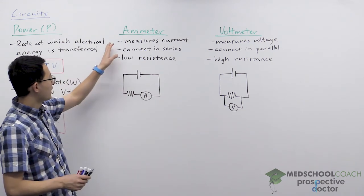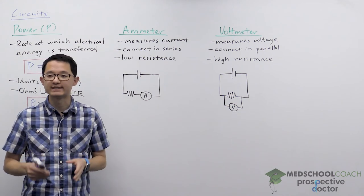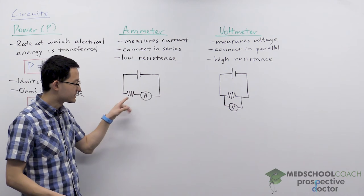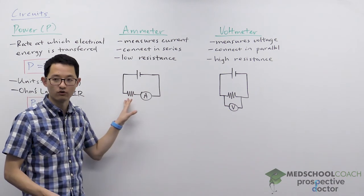First of all, in order to measure current, we know that current is the same in series, which is why an ammeter should be connected in series to the circuit element for what you want to measure the current for.